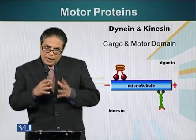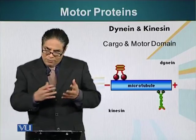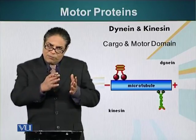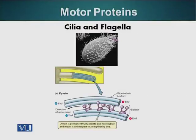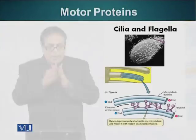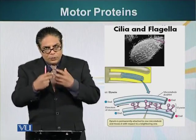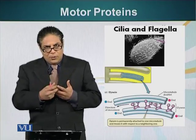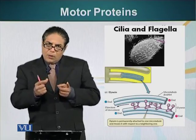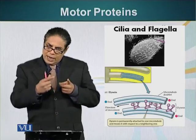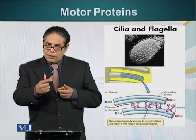These motor proteins can not only transport cargo like vesicles. In the case of flagella or cilia, both domains of these motor proteins are attached to microtubules. So a motor protein will have a microtubule attached to its cargo domain, and the motor domain is also attached to another adjacent microtubule. When this motor protein becomes activated, it uses the energy from ATP molecules, which have high energy bonds. Most motor proteins use energy stored in ATP to move along the microtubule.